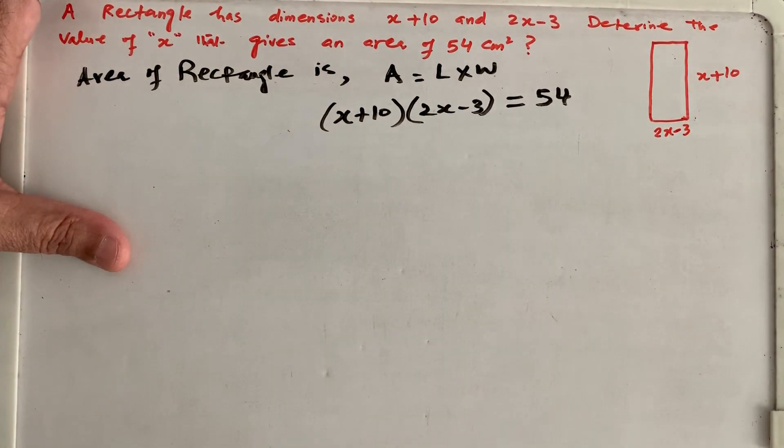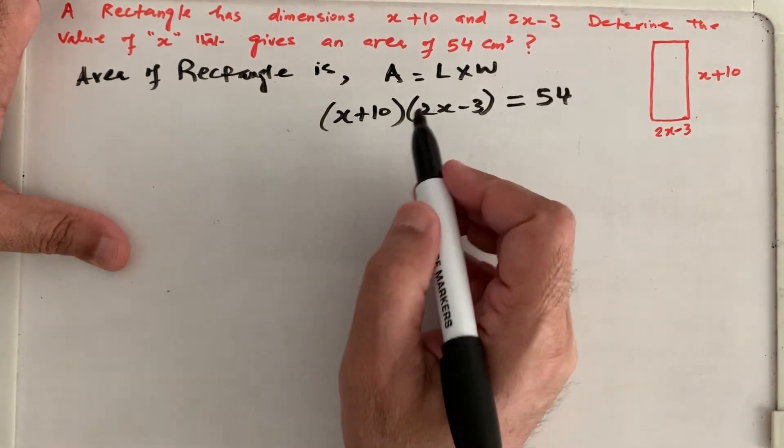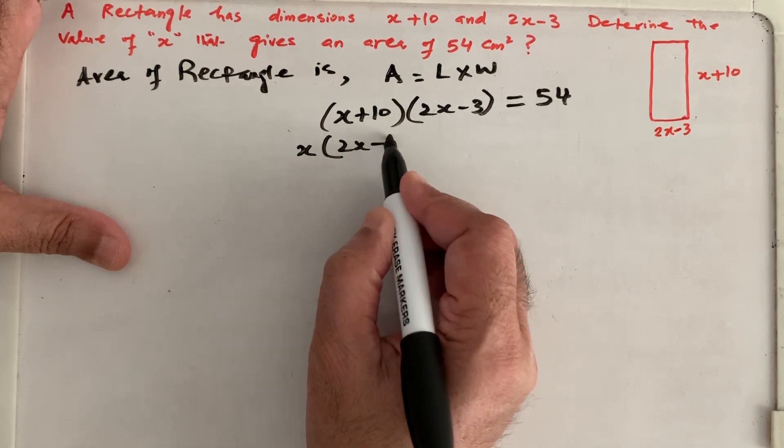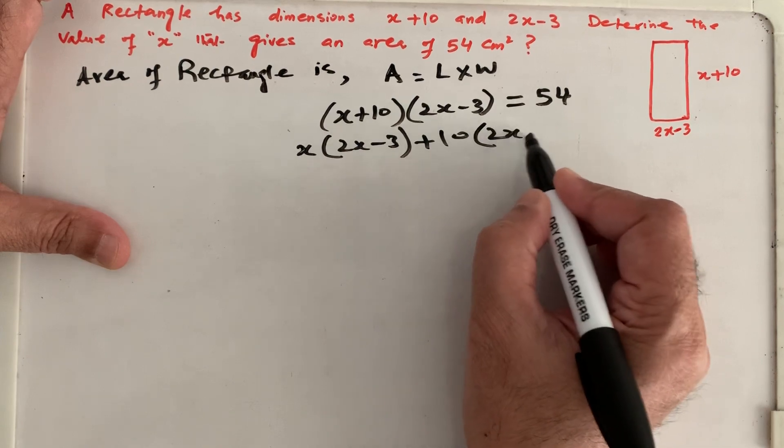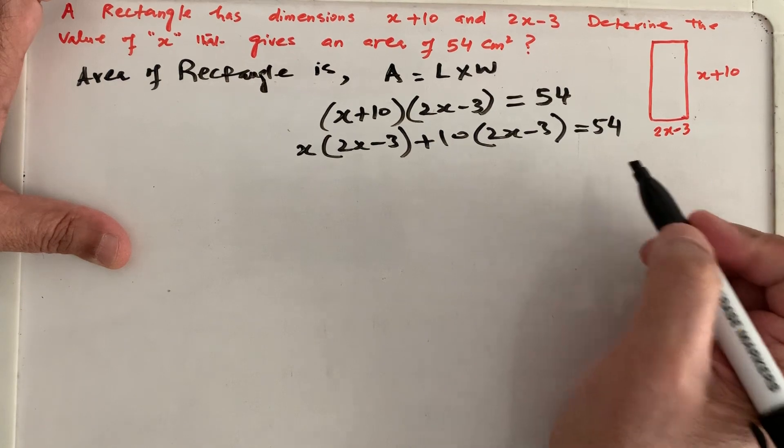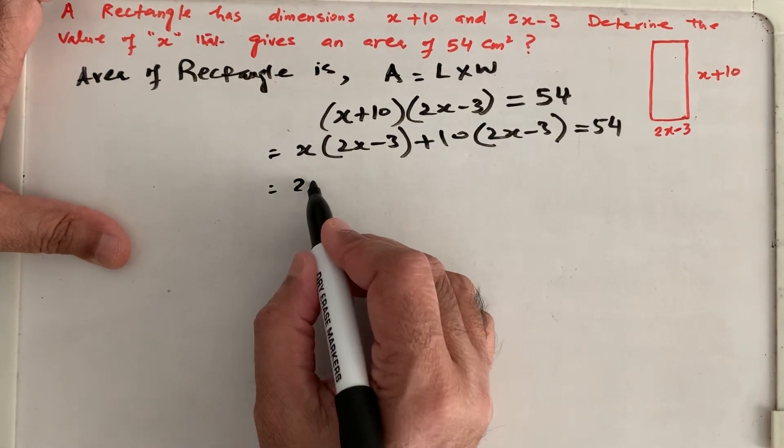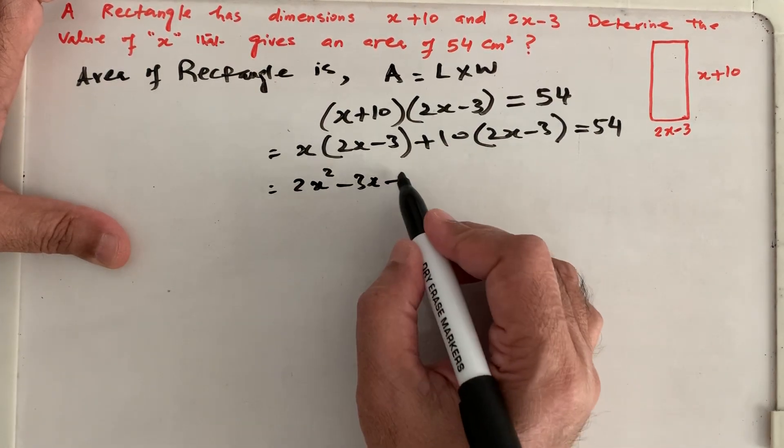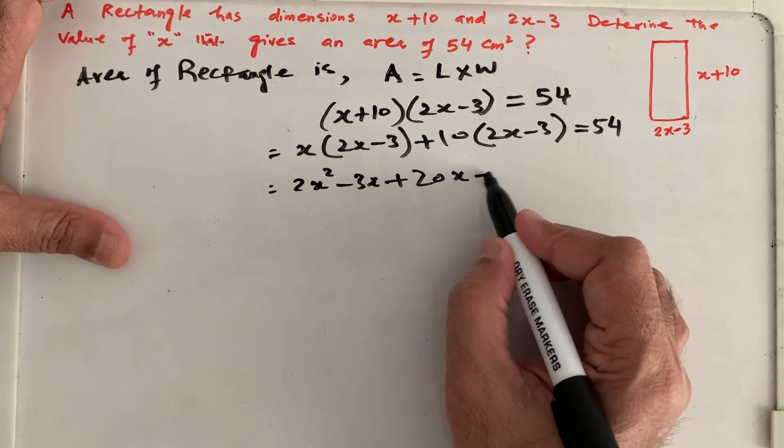So let's begin solving it. When we say that these two brackets are being multiplied, that means x is being multiplied by 2x minus 3, and plus 10 is also multiplied by 2x minus 3, and that equals 54. So we continue to open it. That will be giving us 2x square minus 3x, plus 20x, 10 times 3 is 30, minus 30.